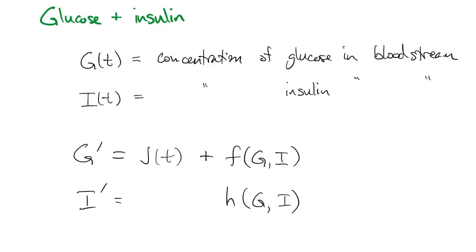So this j of t is the external ingestion of glucose. And then these two functions represent the interactions between the two variables, or the two substances chemically in this case.